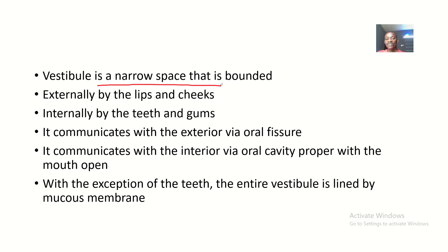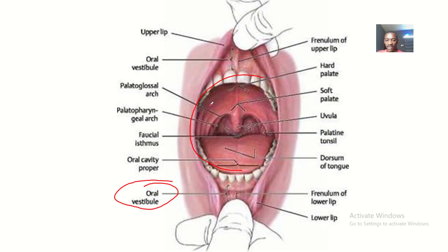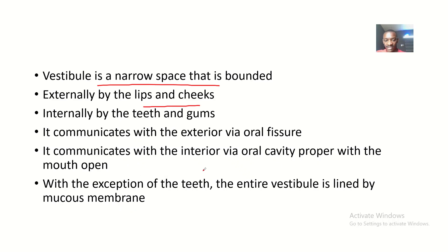The vestibule of the mouth is a narrow space that is bounded externally by the lips and cheeks. You know that we have the lips and the cheeks bounding the vestibule of the mouth. Internally, this space is bounded by the teeth and the gums.